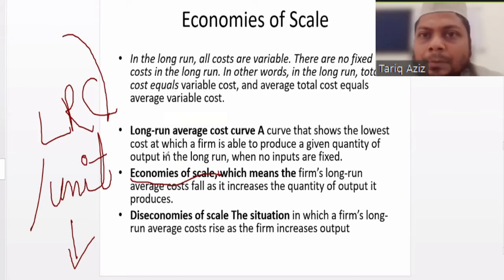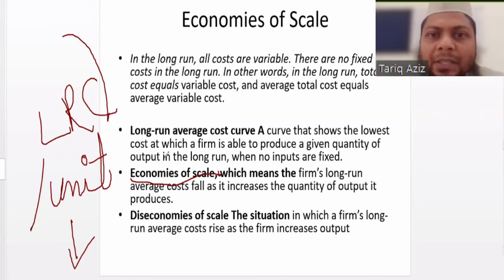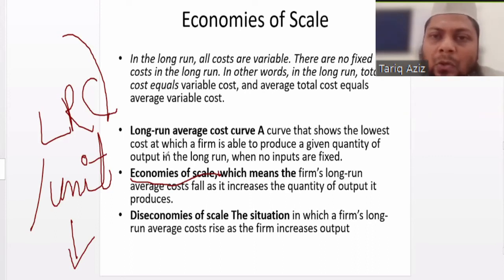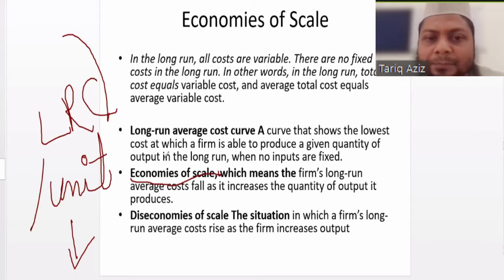In simple words, if a firm is producing less, the cost of producing per unit will be high. But if the scale of production is increased — for example, if there is a firm producing 1,000 shoes per day and it increases the scale to 5,000 shoes per day — as a result of that increase in scale, the cost of production per unit or per shoe will decrease. That situation is called economies of scale.